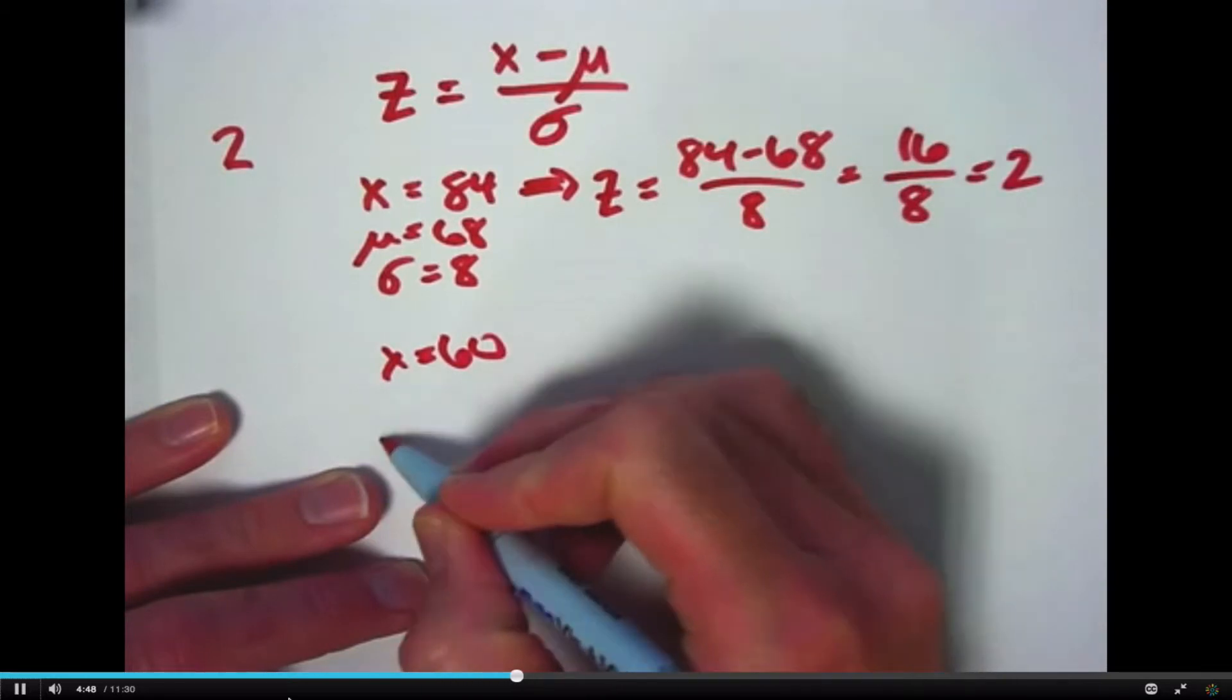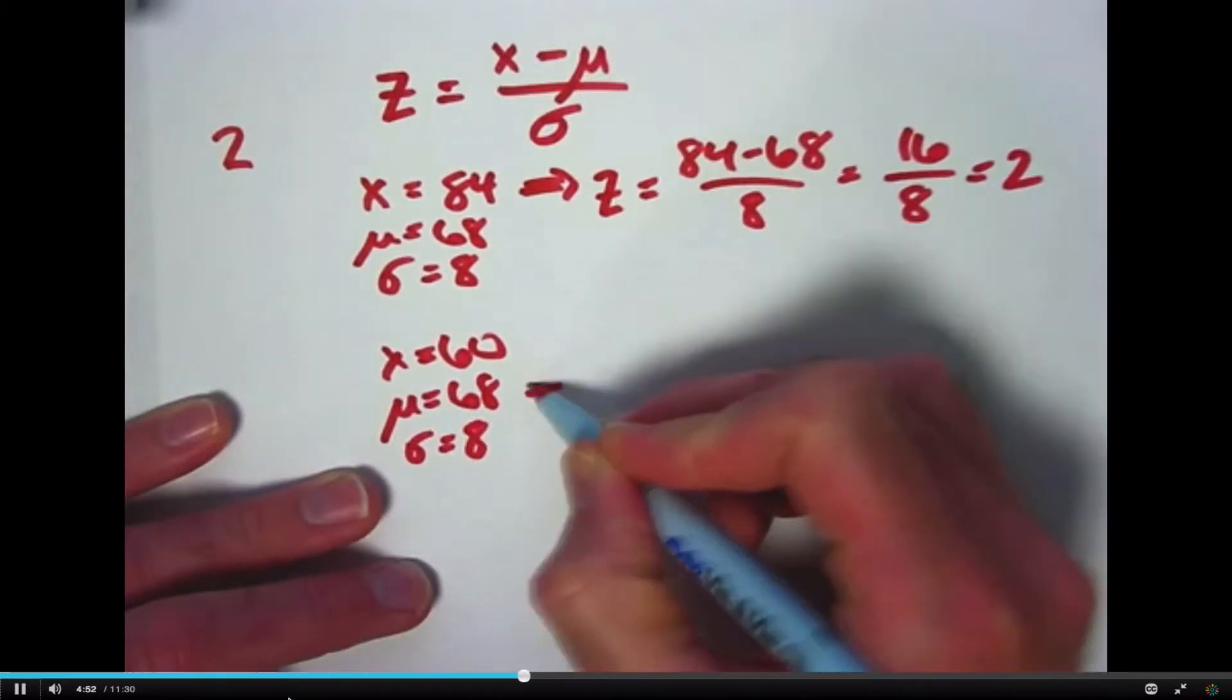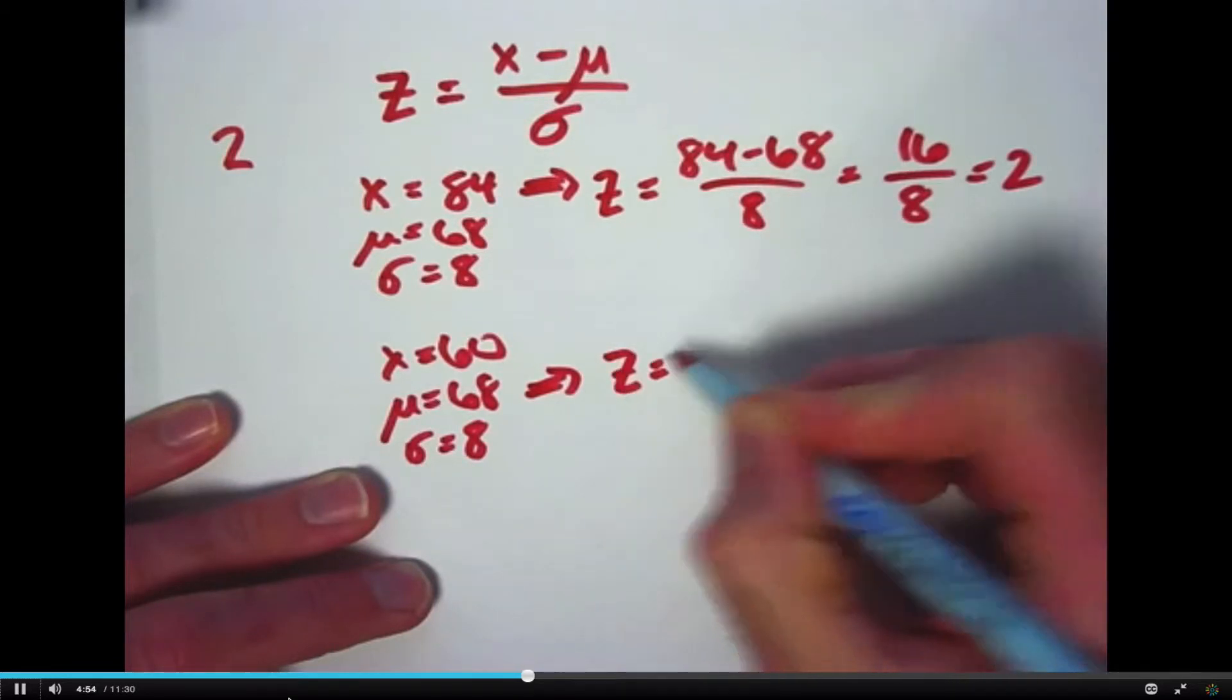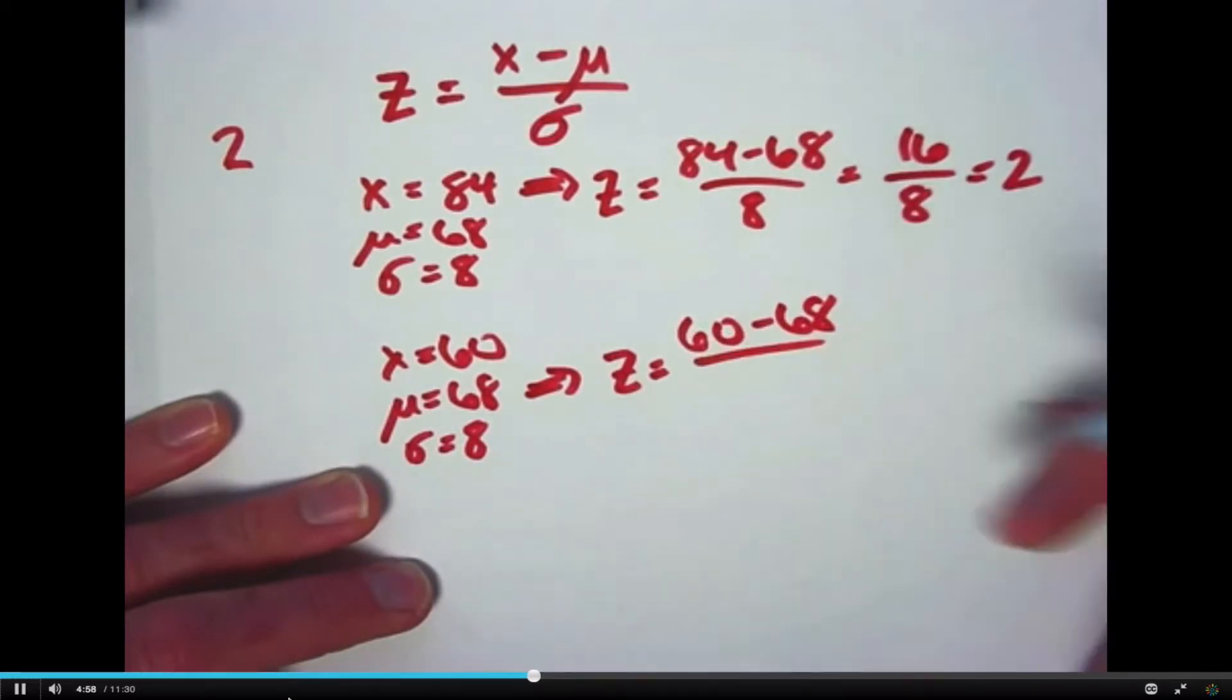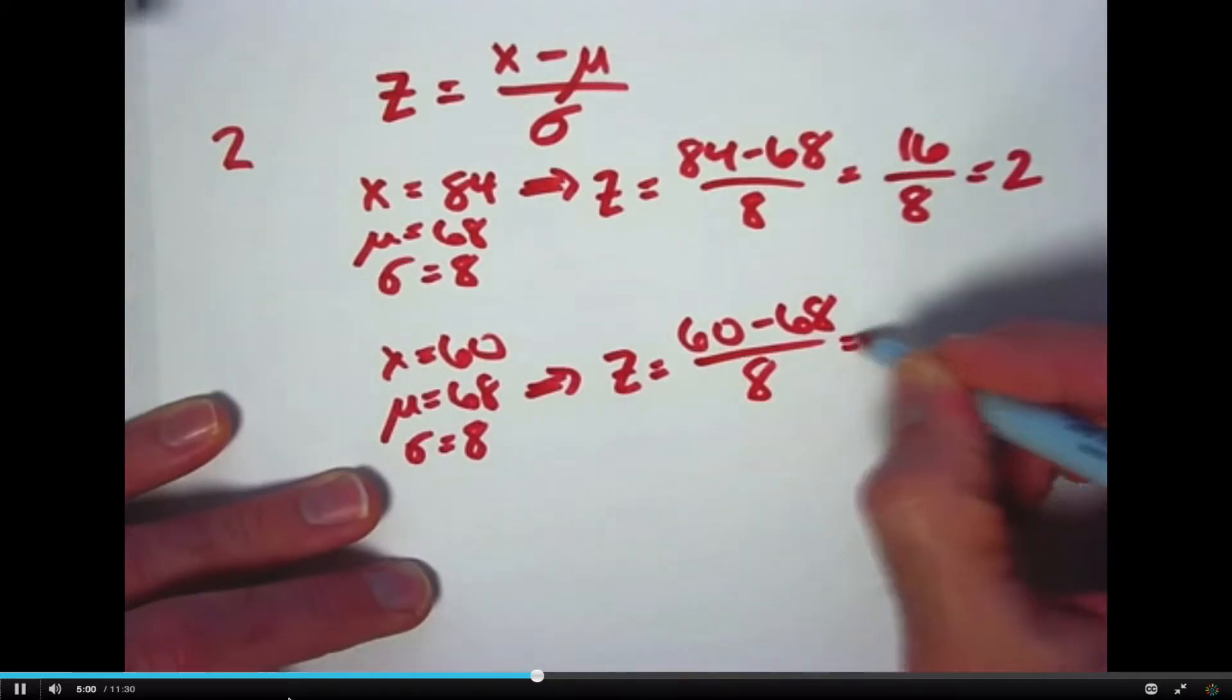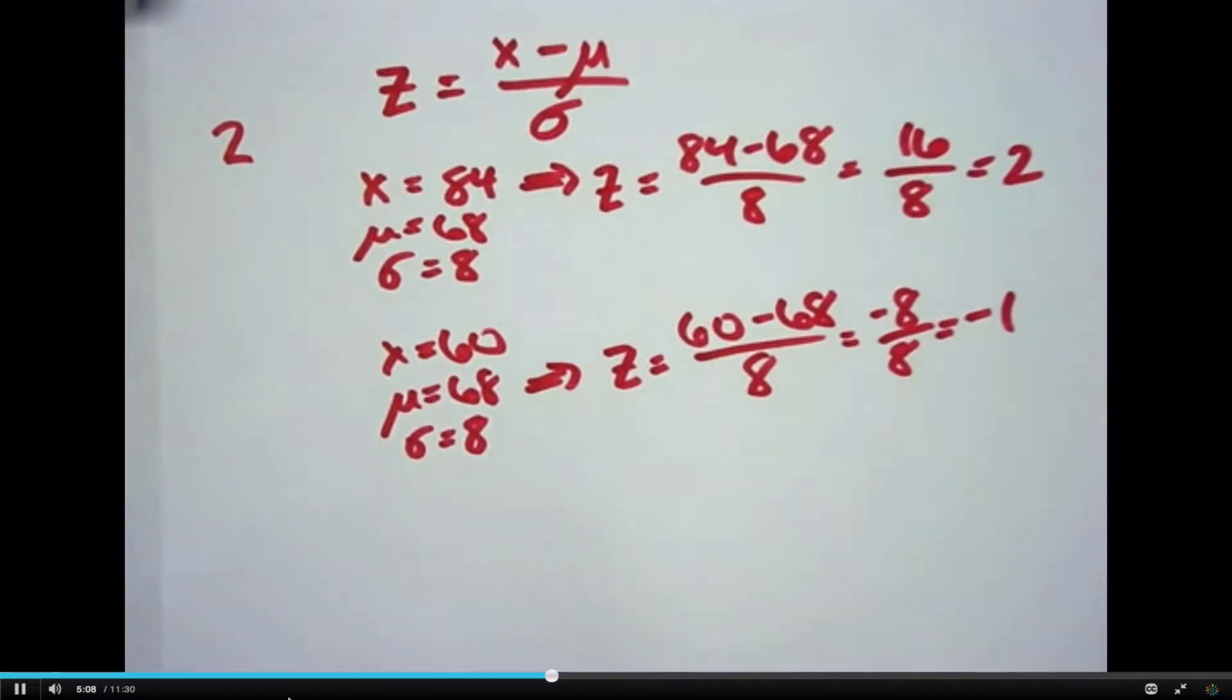On the other hand, if x is 60, still μ is 68, and σ is 8, then this formula is going to give you 60 minus 68, which is negative, divided by 8. Negative 8 divided by 8 is negative 1, telling you you are one standard deviation below the mean. And that should make good sense. You can try other examples to reason this out.